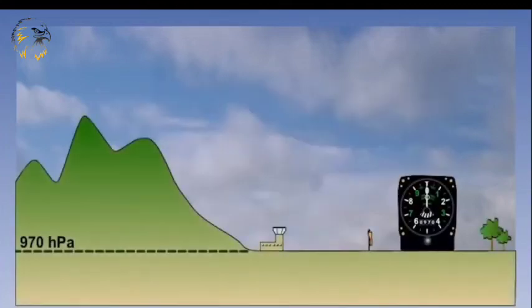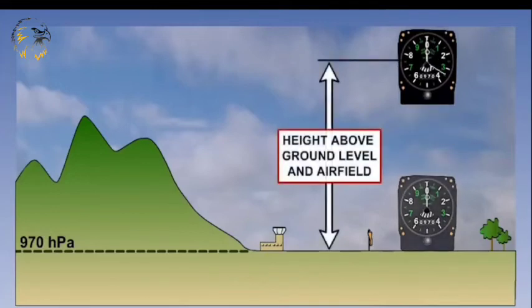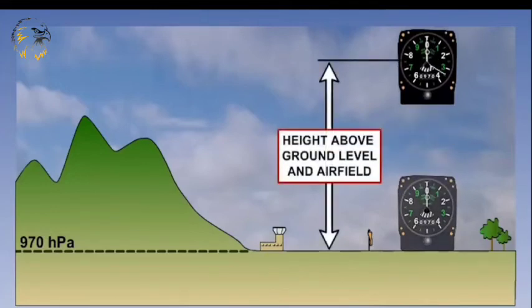Let's work through an example. If we place the altimeter on our airfield and set the subscale to the actual pressure of the airfield, then our altimeter will not only tell us how high we are above that pressure level, but also how high we are above the airfield. In other words, it will tell us our height above the ground.